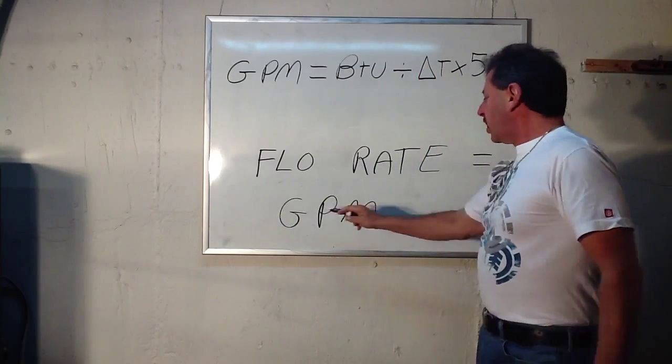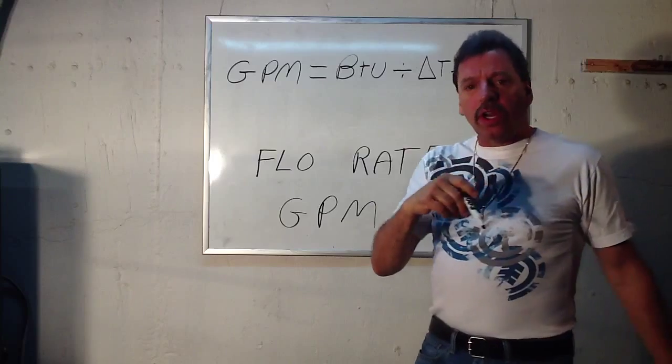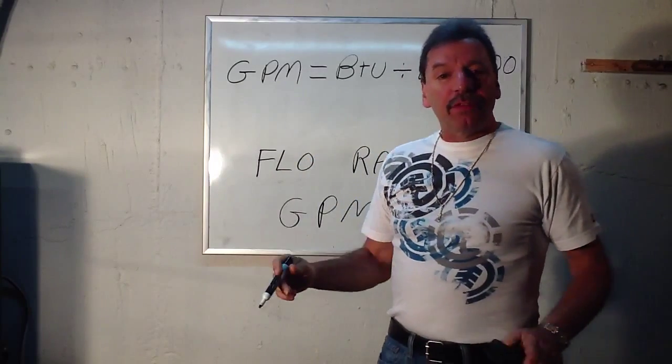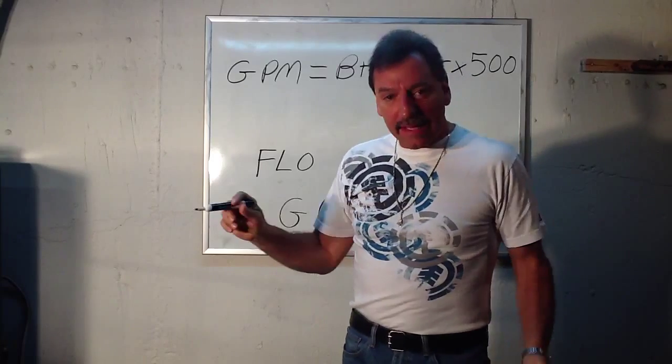And what flow rate means is gallons per minute. The water traveling through the copper pipe. How many gallons travel through in one minute? That's the flow rate.